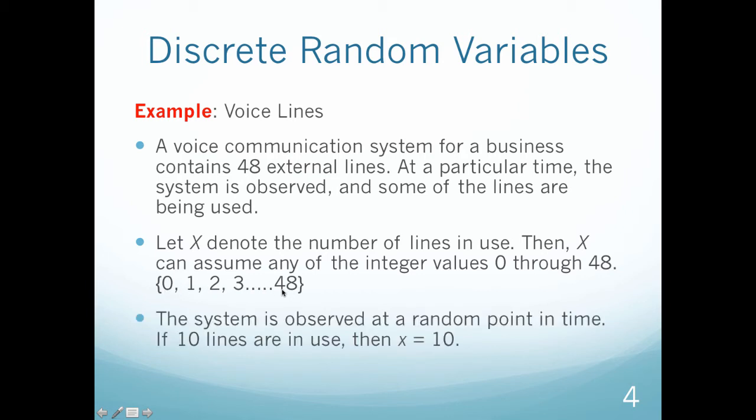The system is observed at a random point in time. For example, if 10 lines are being used, then lowercase x equals 10. We've seen that before written as the probability of capital X equaling lowercase x equals something, and that is the probability that my random variable equals one of those values in its range, or in this case 10. That's just a simple example to kind of dissect our new vocabulary.